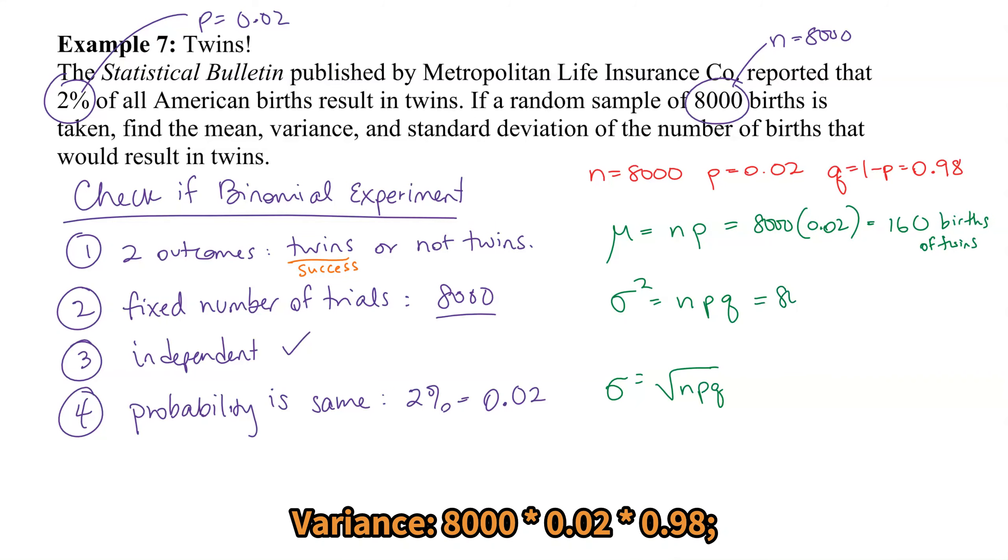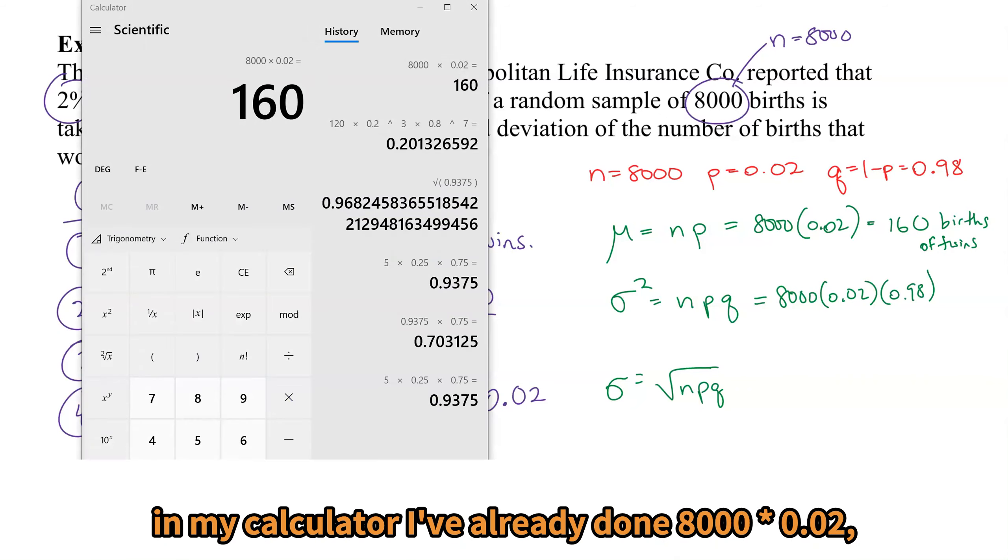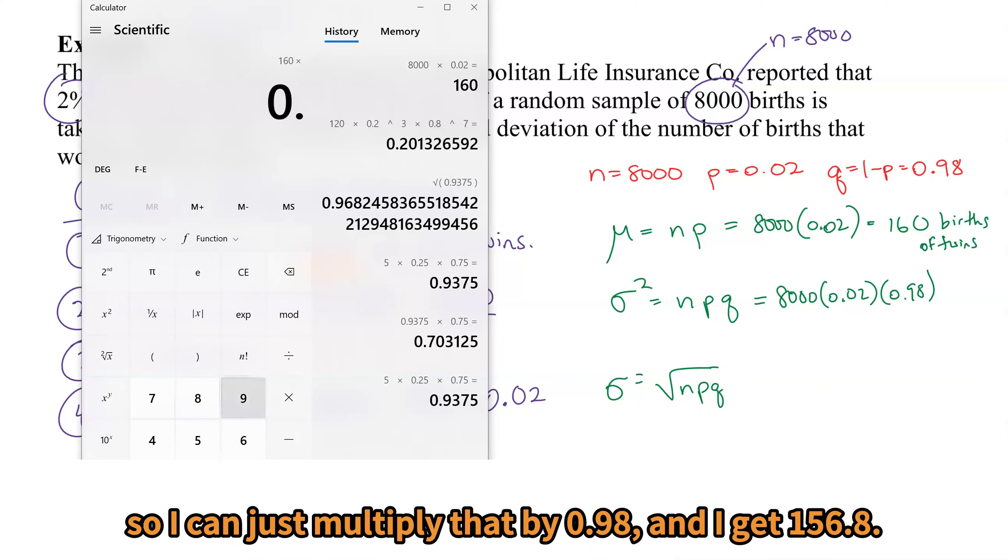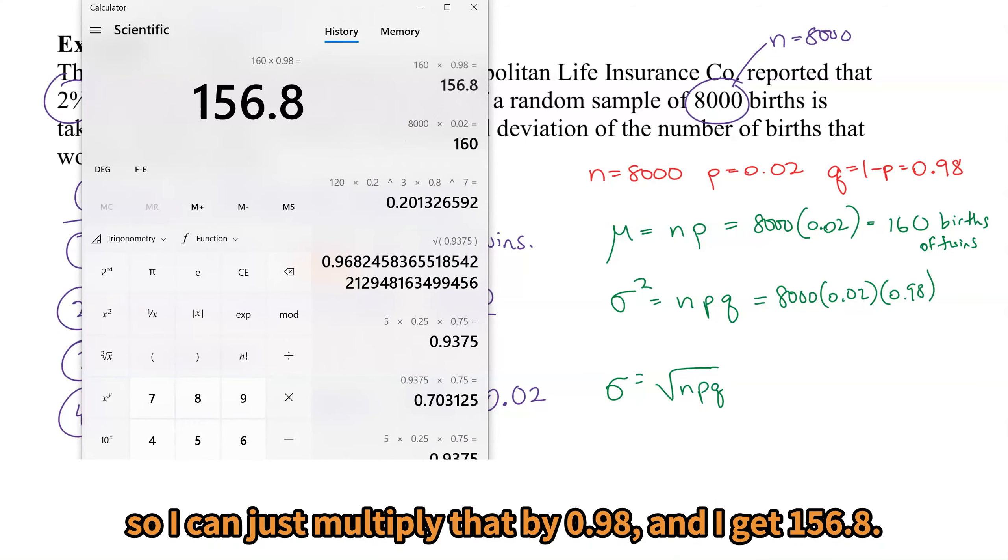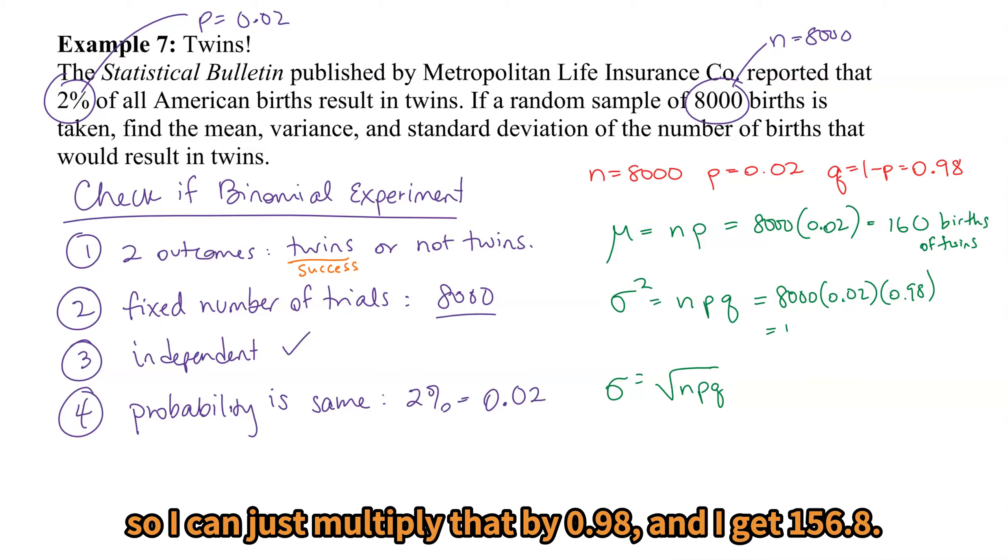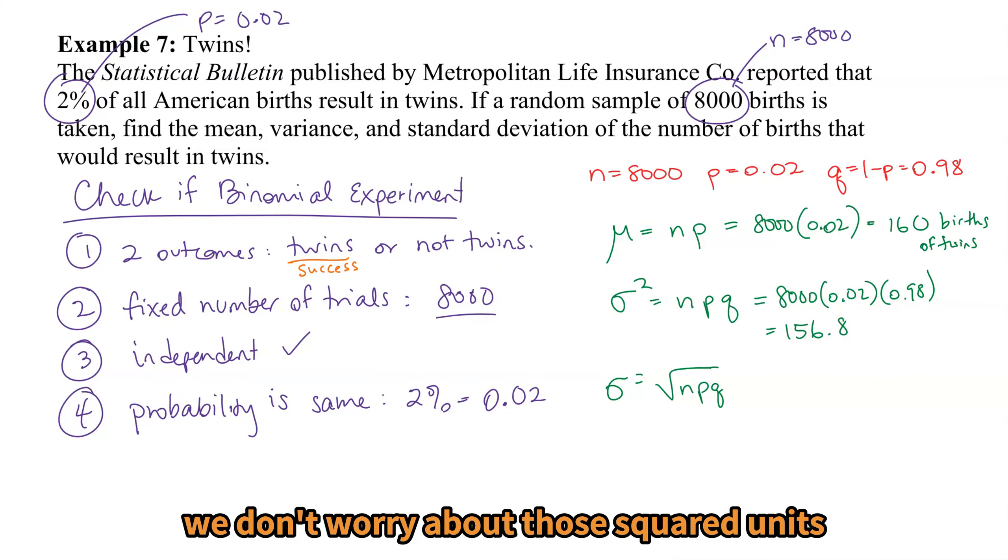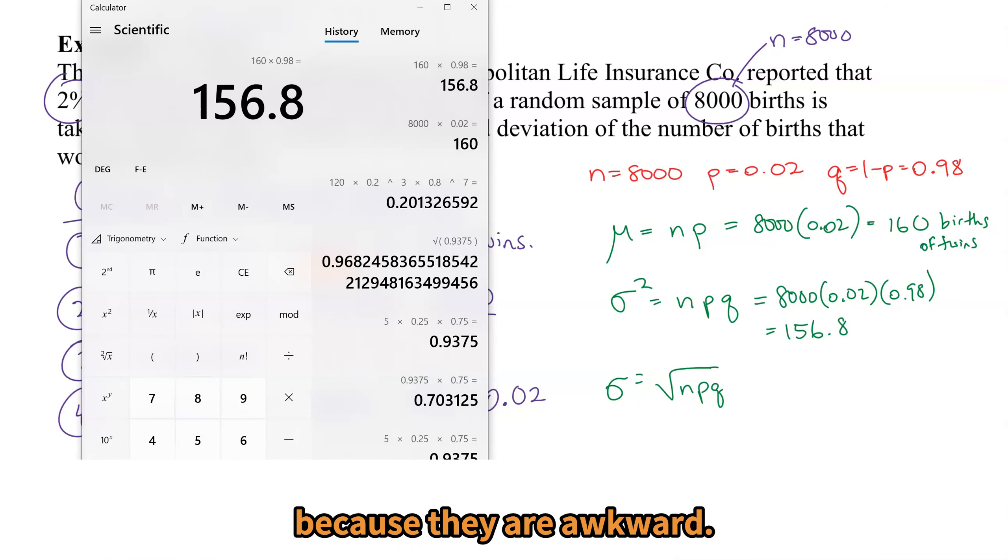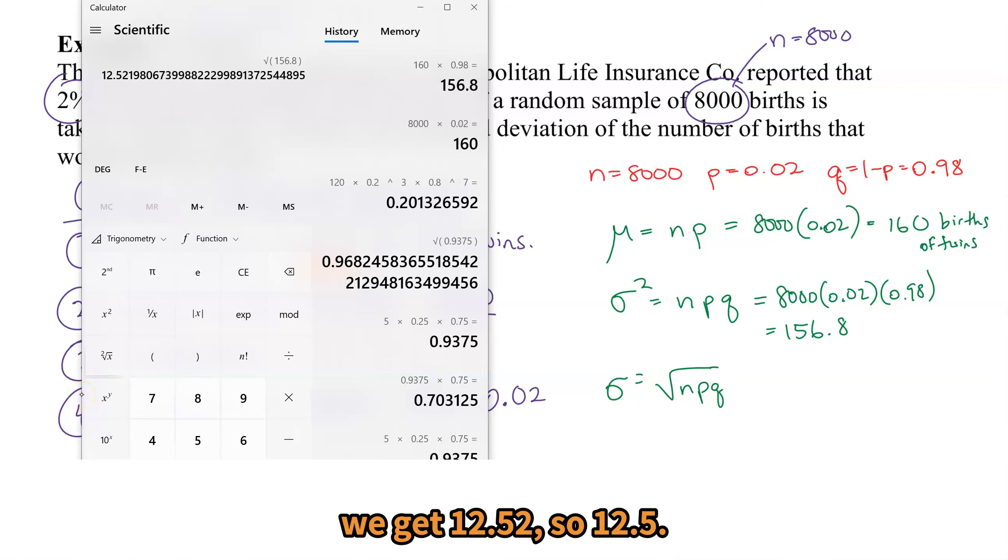Variance: 8,000 times 0.02 times 0.98. In my calculator, I've already done 8,000 times 0.02, so I can just multiply that by 0.98. I get 156.8. And remember, for variance, we don't worry about those squared units because they are awkward. And for our standard deviation, take the square root. We get 12.52, so 12.5.